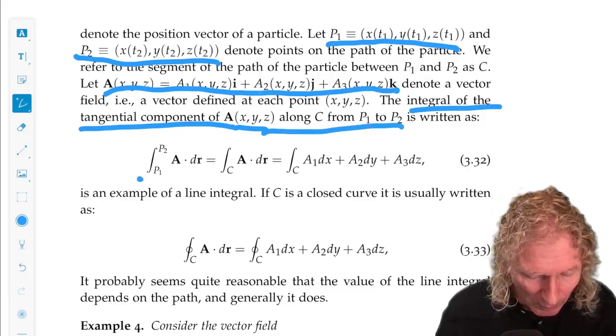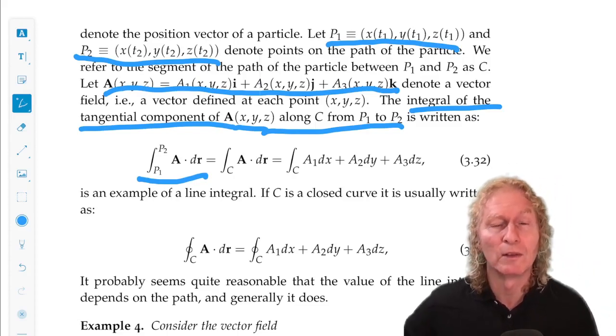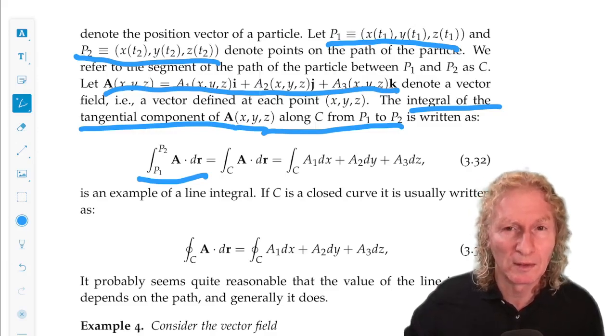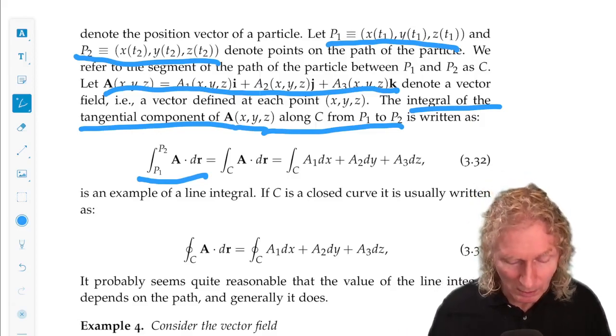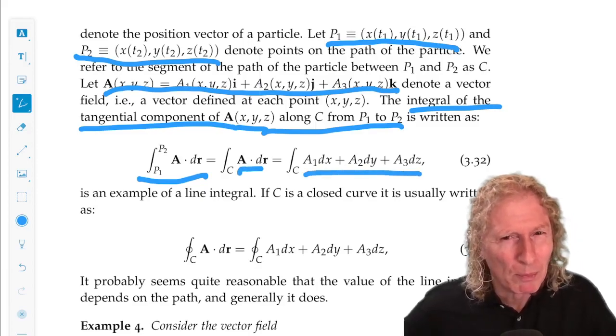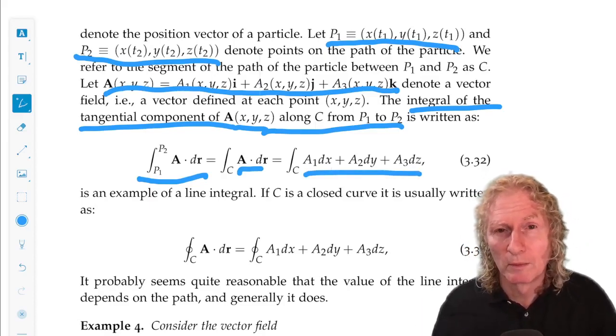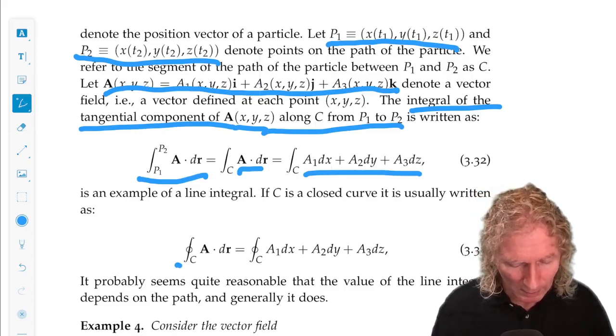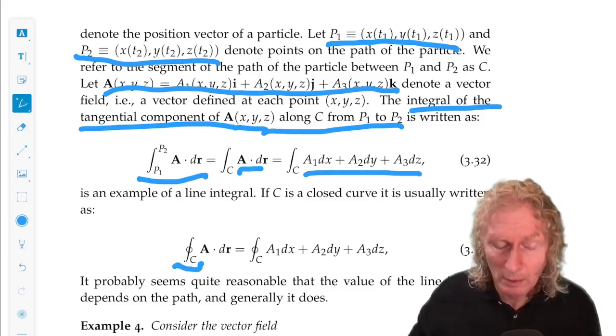So that is given by this expression, the integral of A dot dr. Now dr is dx times i plus dy times j plus dz times k. So computing the integrand is pretty easy. And if we're integrating around a curve that is closed, we sometimes write it with a little circle in the integral. And c for a closed path.